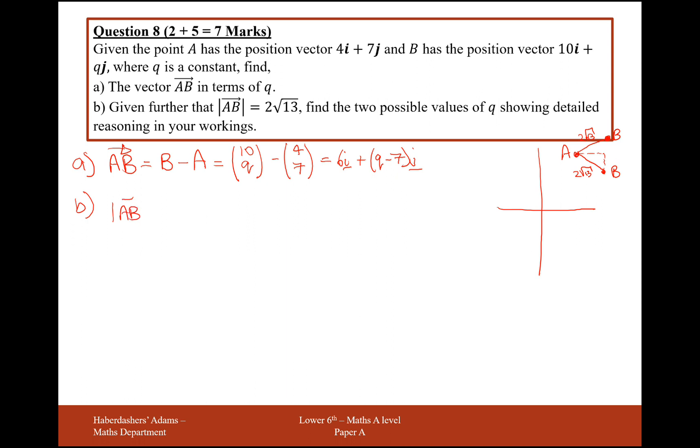So AB modded using what we found from above. To get from A to B you need to do 6 squared and then add q minus 7 squared. And this will equal 2 root 13.